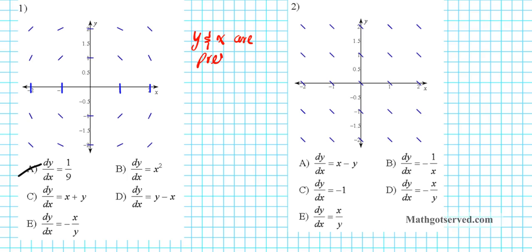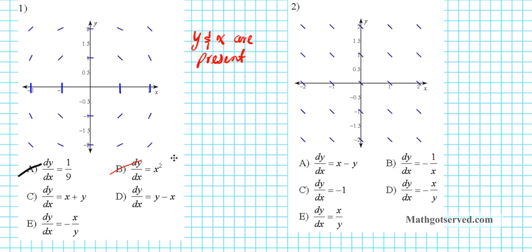After our two investigations, we know that both x and y are present in the differential equation because they both impact the steepness of the line. So we look at our alternatives and ask: which has either x or y alone? The answer is option B — it has only x. This cannot be a possible solution because both variables play a role, and option B tells us only x matters, not y.